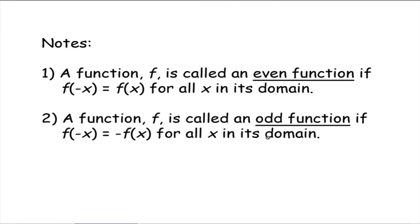A function f is called an odd function if f of negative x is equal to the opposite of f of x for all x in its domain. If you remember from symmetry, that was the definition for symmetry with respect to the origin. So the definition for an even function is f of negative x equals f of x, and for an odd function, f of negative x equals negative f of x.